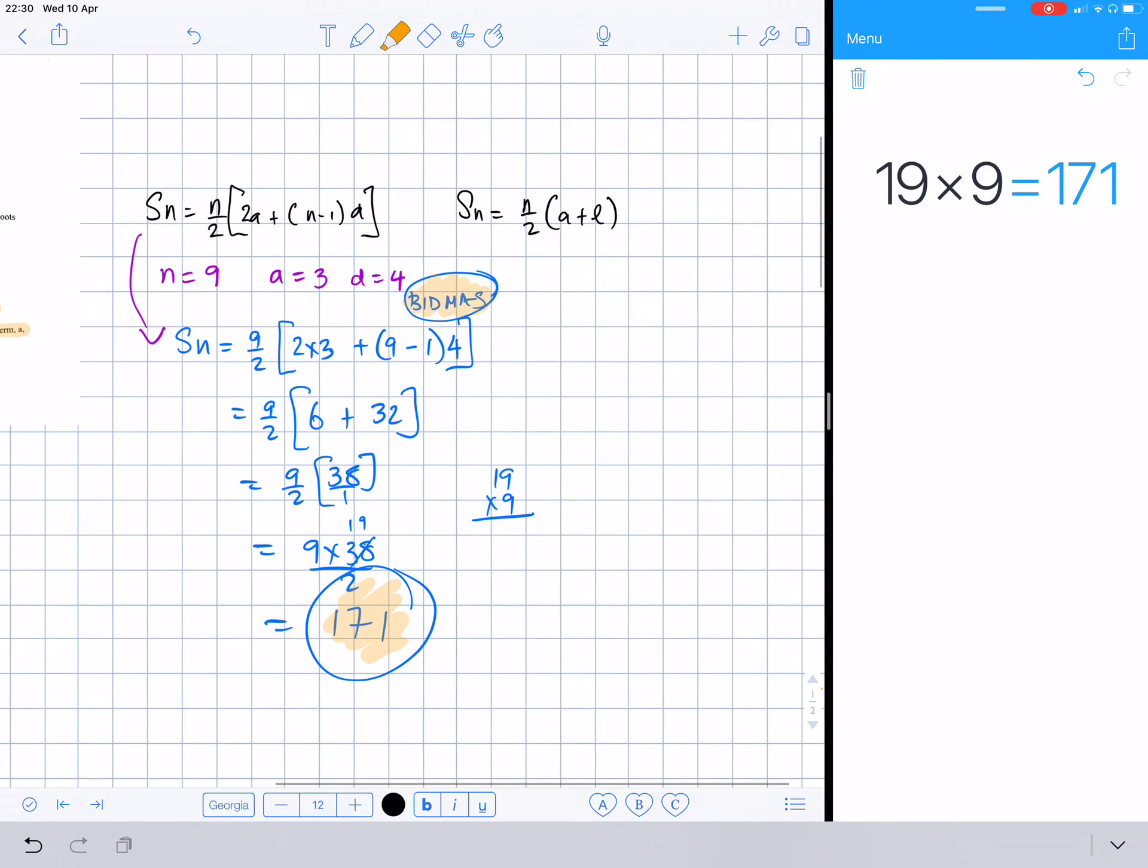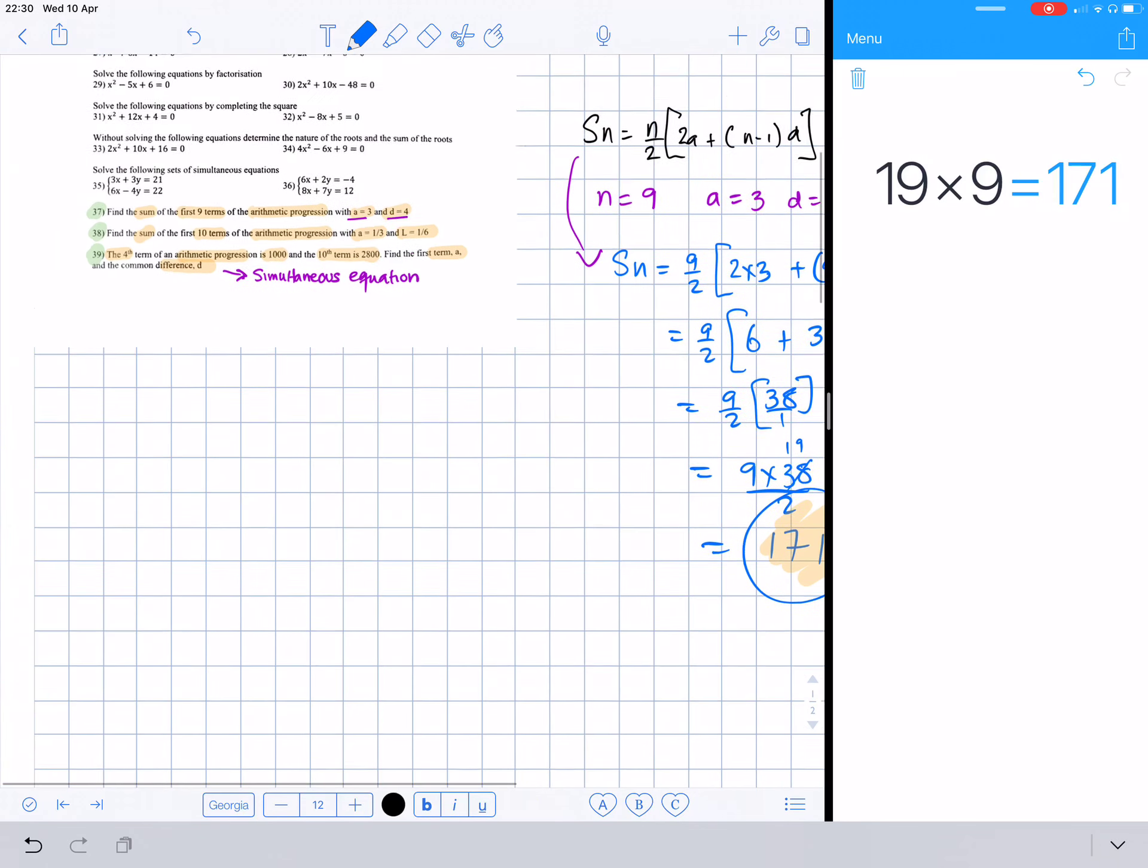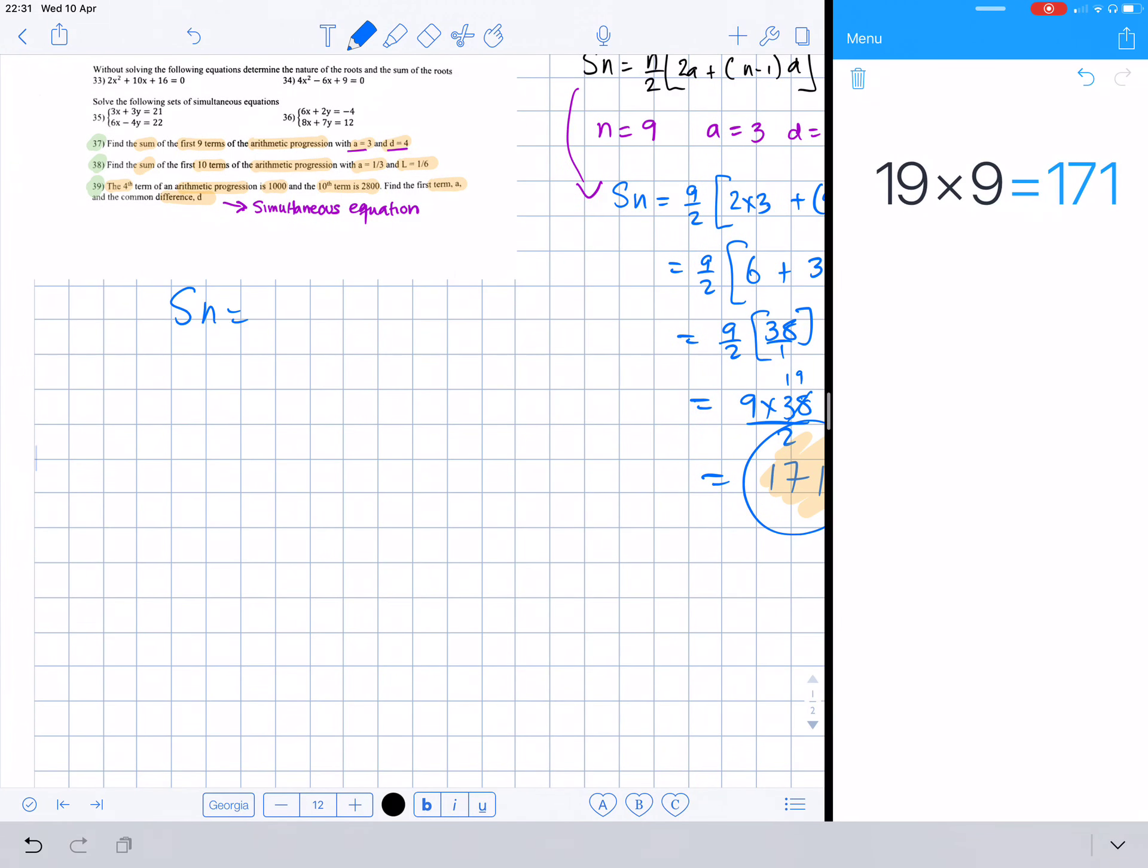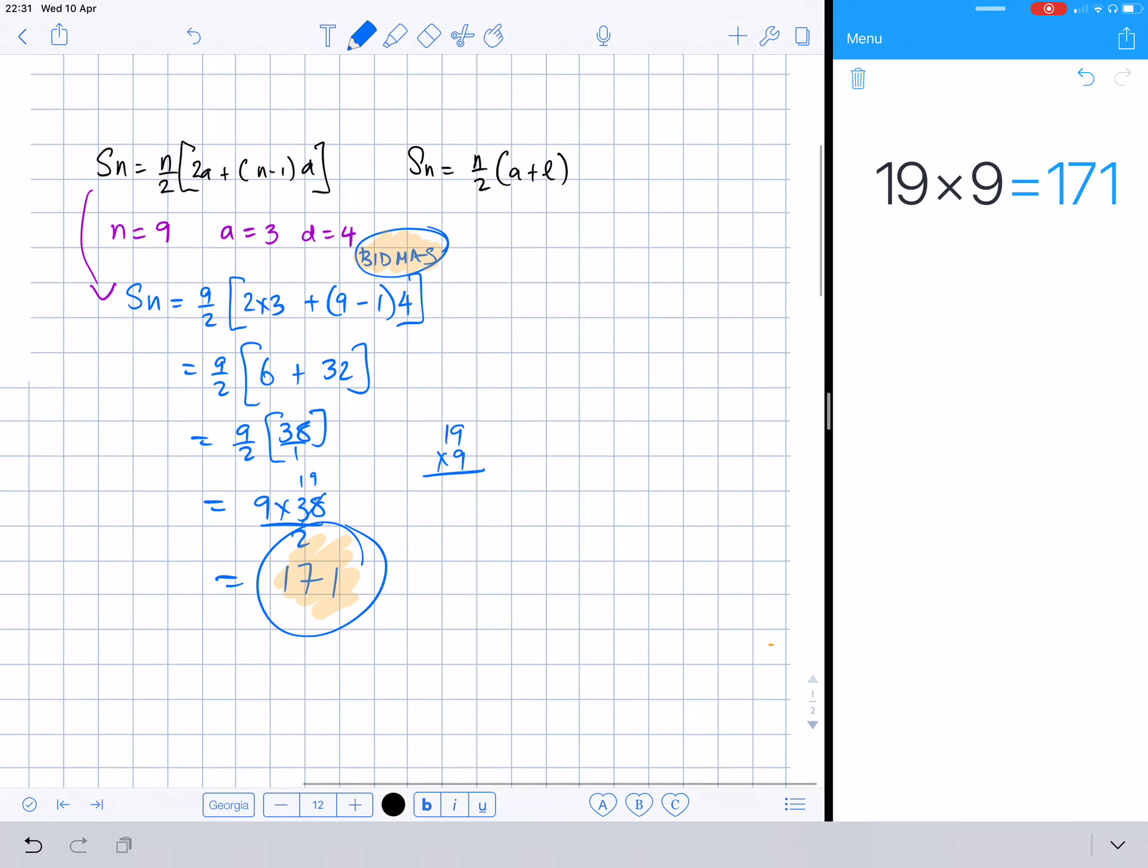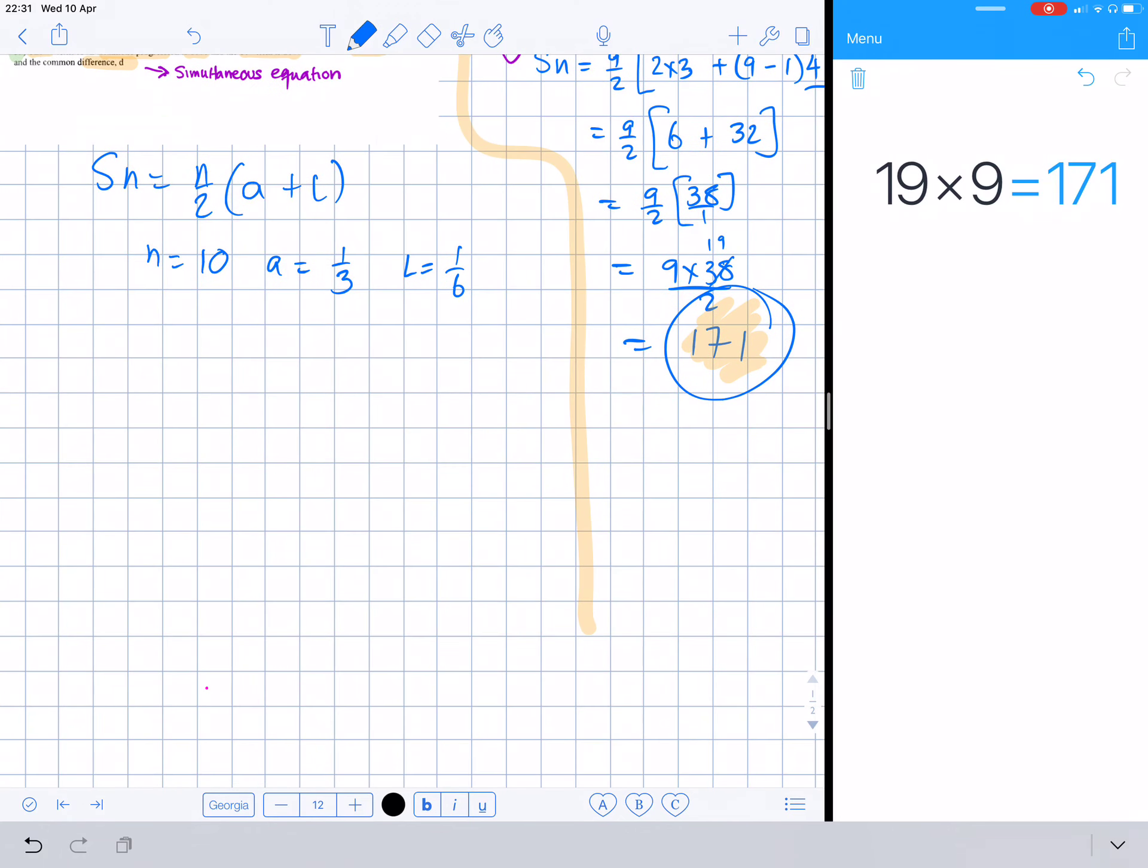Now for the second one, we're going to use this equation: Sn equals n over 2 times a plus l. A plus l because we're given the first ten terms, so n is 10, a equals one third, and l equals one sixth.